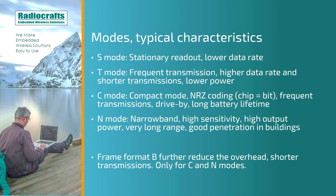So about the modes — we have the S mode, which is for stationary readout using a quite low data rate. This is for installations where you have a stationary gateway and typically receiving data not very frequently from the meter.